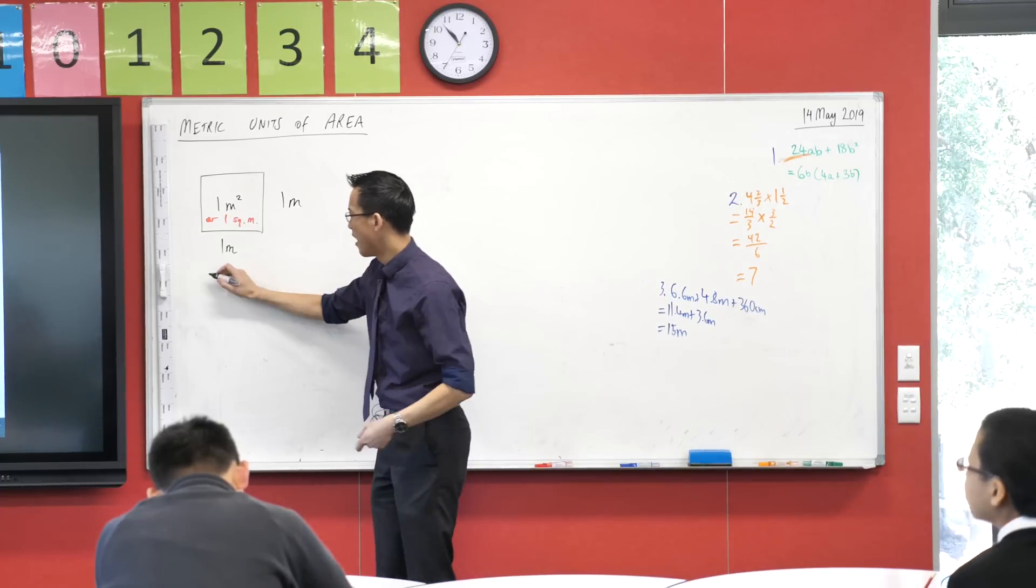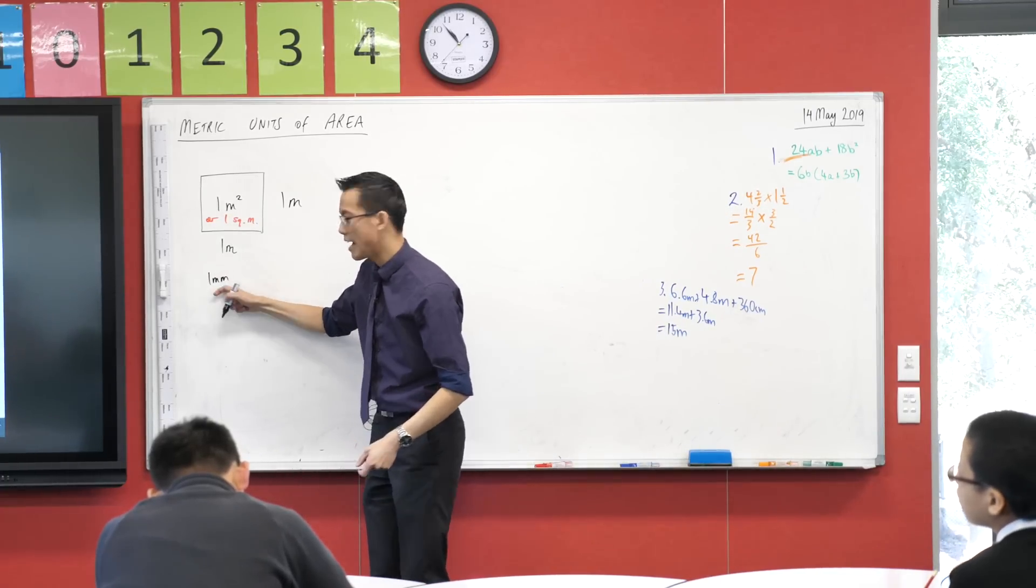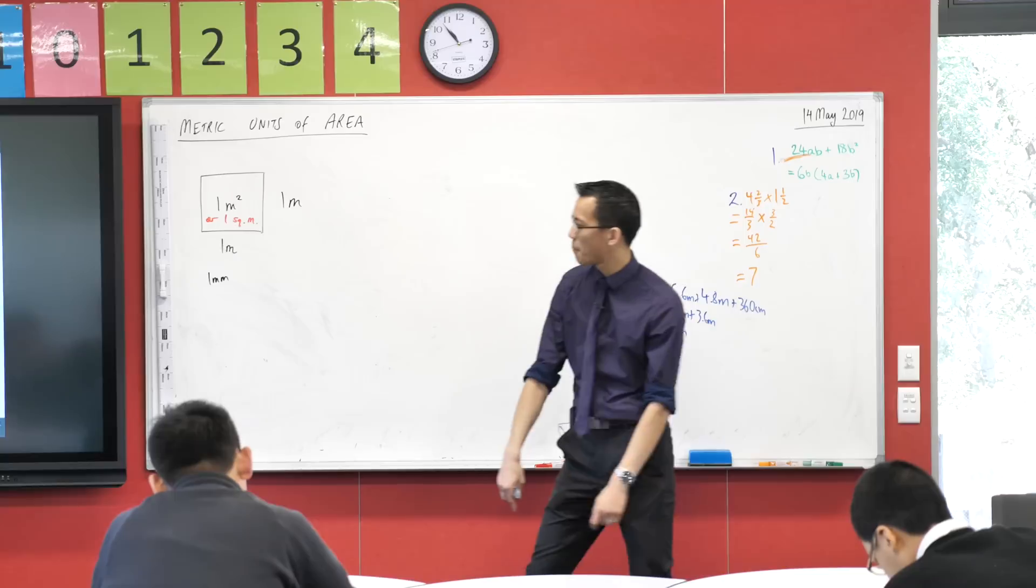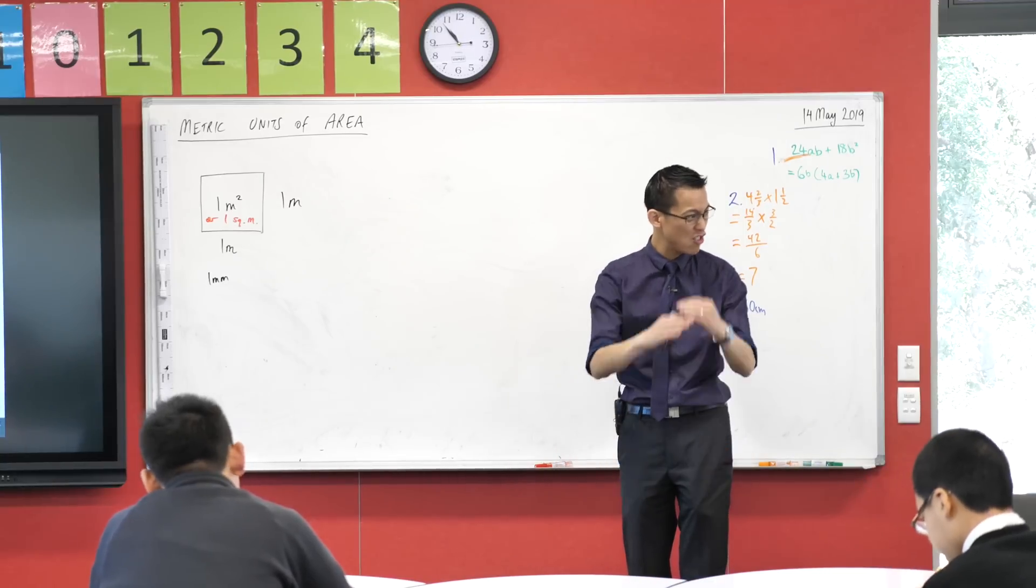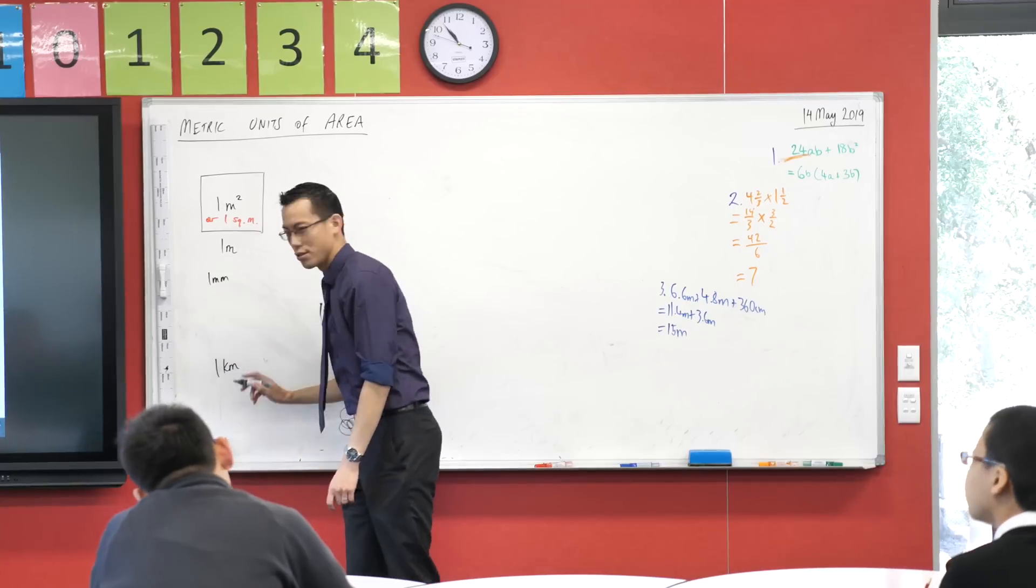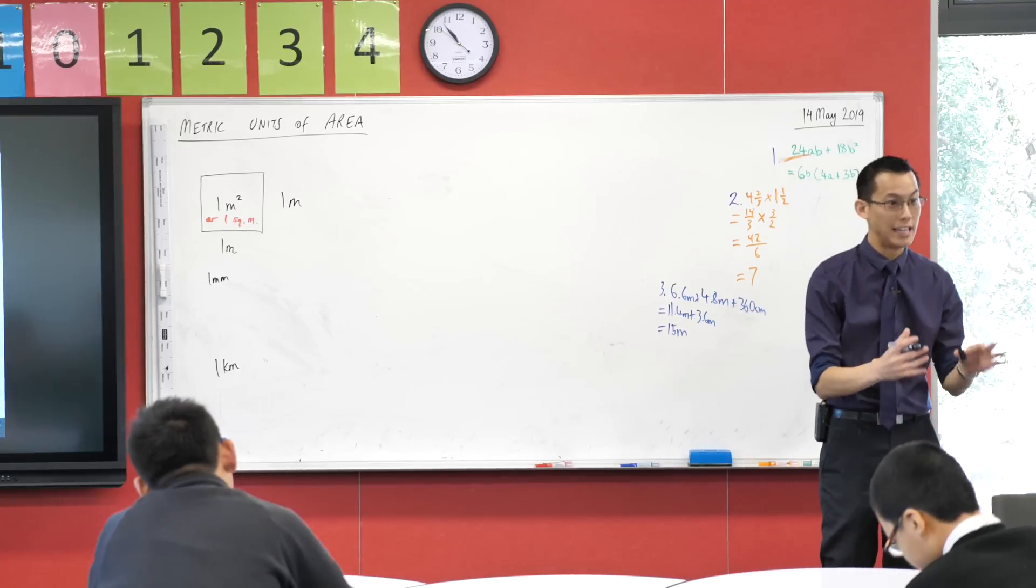After one millimetre, I'd like you to write as many of the next units that you can, increasing in size, and maybe we can stop at a kilometre. Can you do the ones in between? And I'll give you a minute or so to try and complete that list. We're looking at the metric units for length.